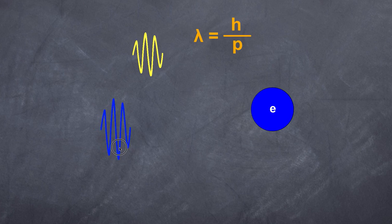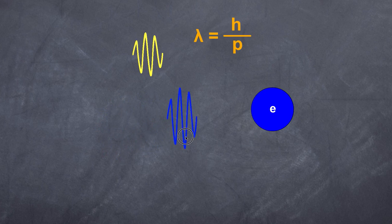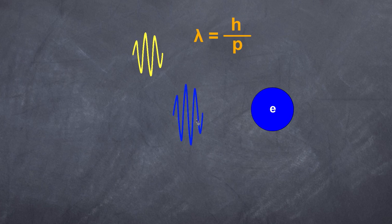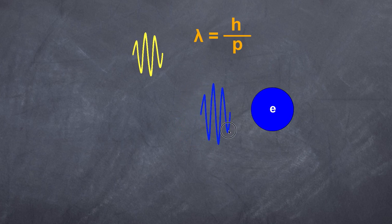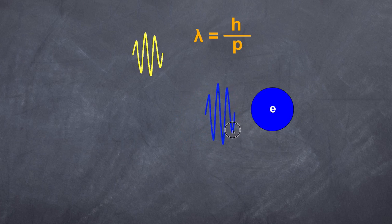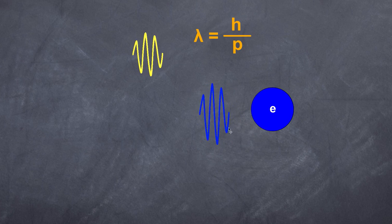Now let's say I want to know more accurately the electron's position, so I use a smaller wavelength — a blue photon of light. Although that gives me greater resolution because the wavelength is smaller, the momentum is now larger. So although I get an increased ability to recognize where the electron is, I automatically decrease my ability to understand its momentum. The sheer act of observing causes momentum to be transferred, so my electron will actually have a different speed — it speeds up or slows down due to that momentum transfer.